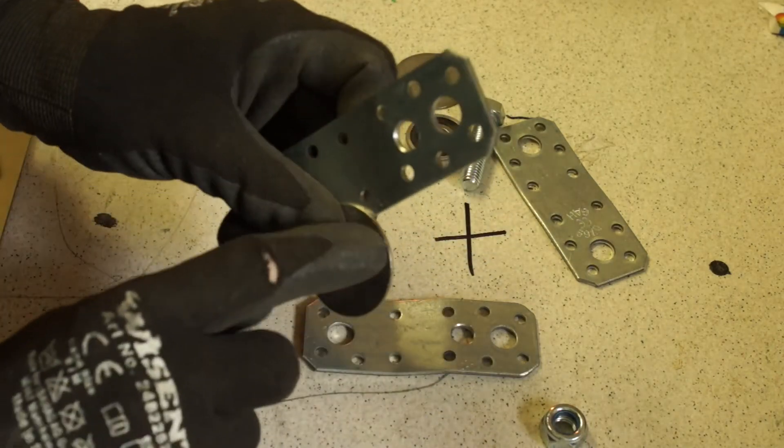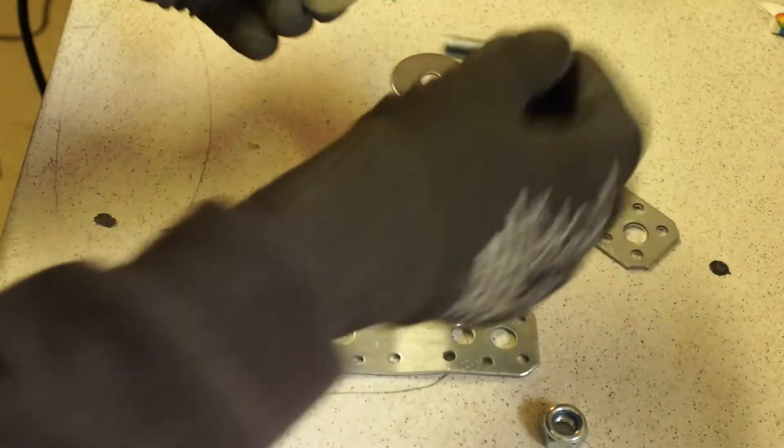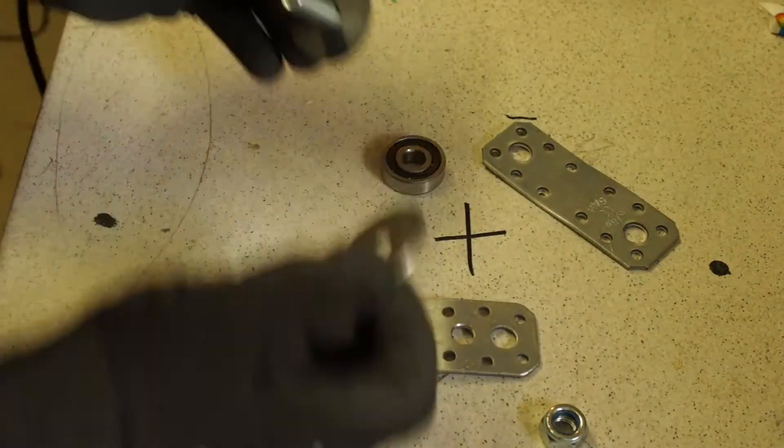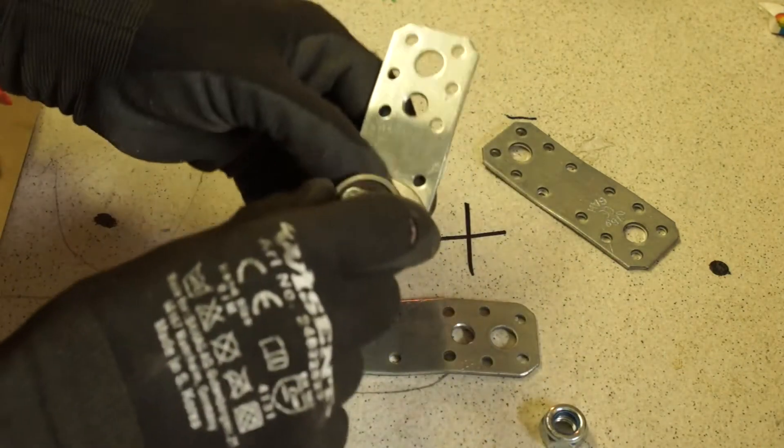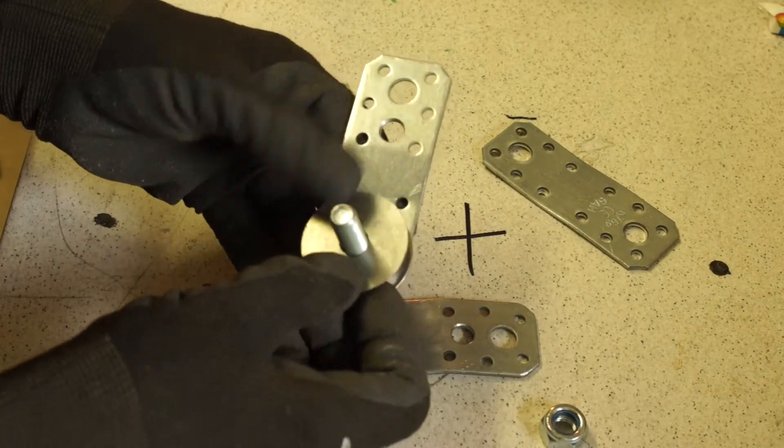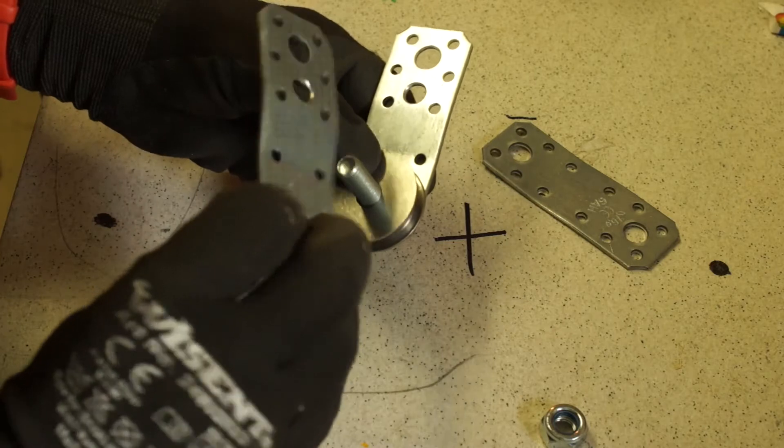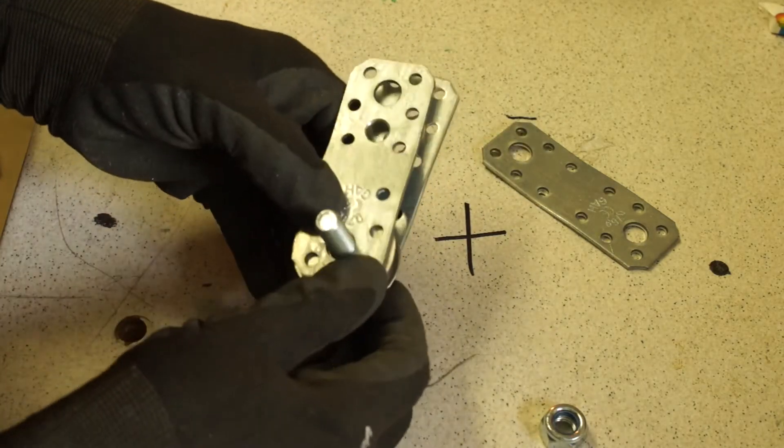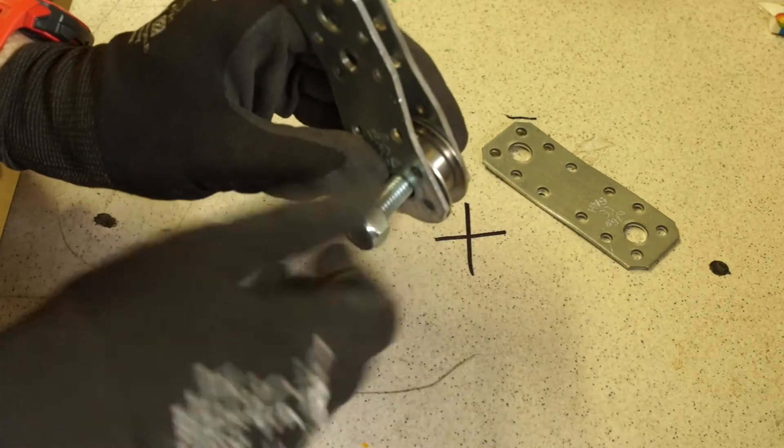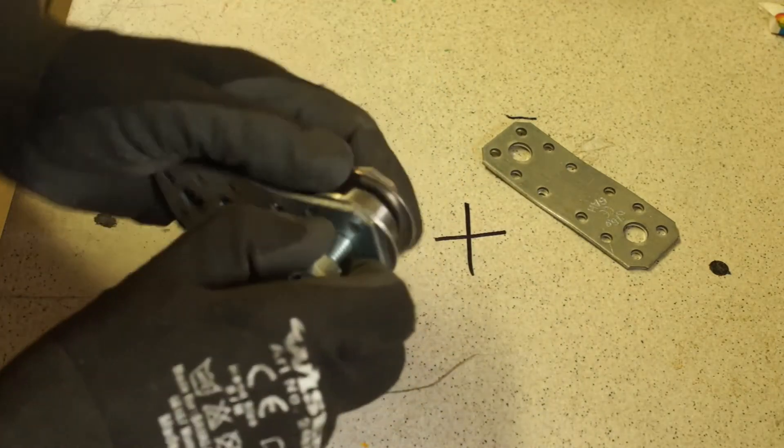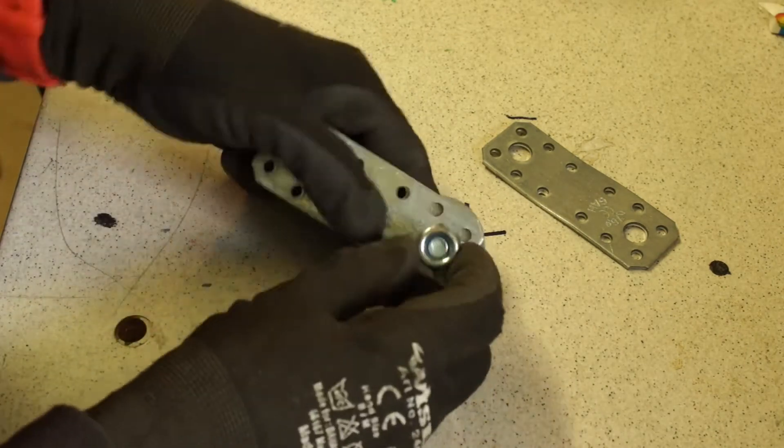Always keep in mind the round edge has to be in the direction of the rope. Also here the round edge in the direction of the rope. First of course the ball bearing and right way around. So looks good.